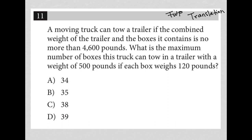We do not know the weight of the trailer. I'll call it T. We do not know the weight of the boxes. I'll call that B. But we do know that when you add those two things together, it should be no more than, which means less than or equal to 4,600. So there's my translation of the first sentence.